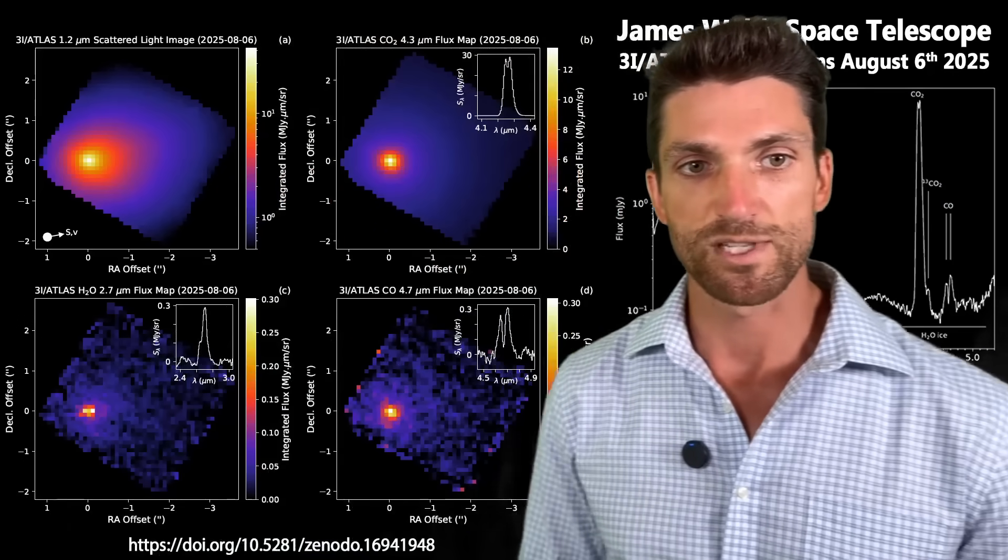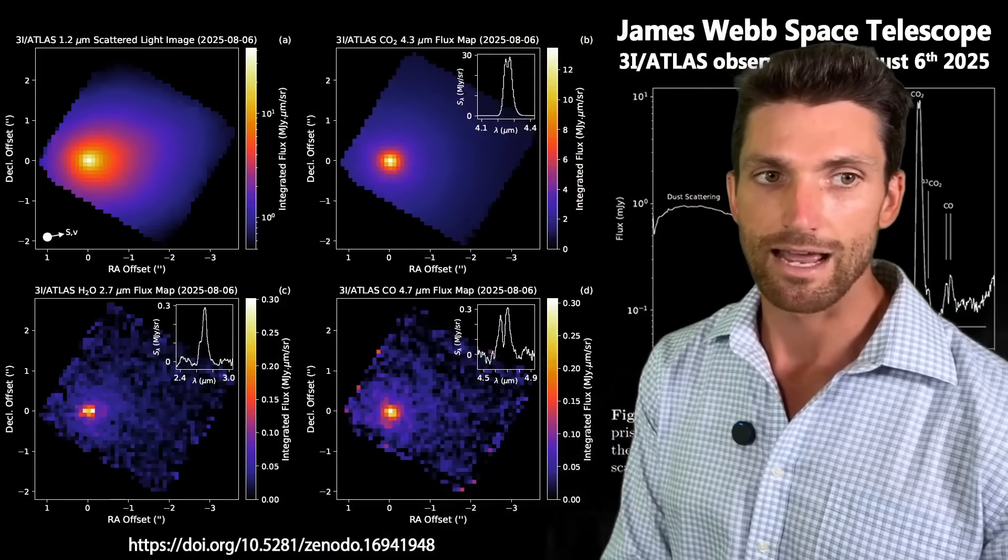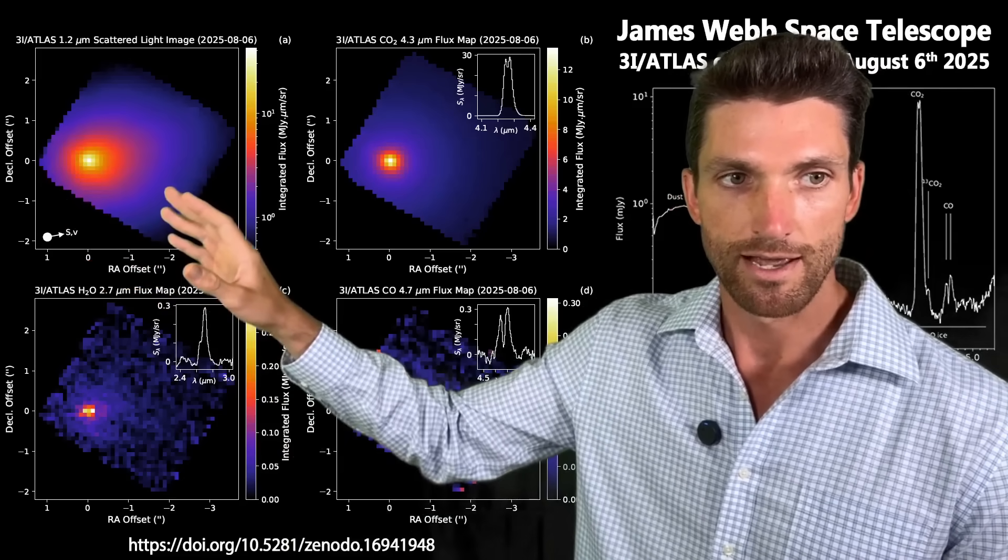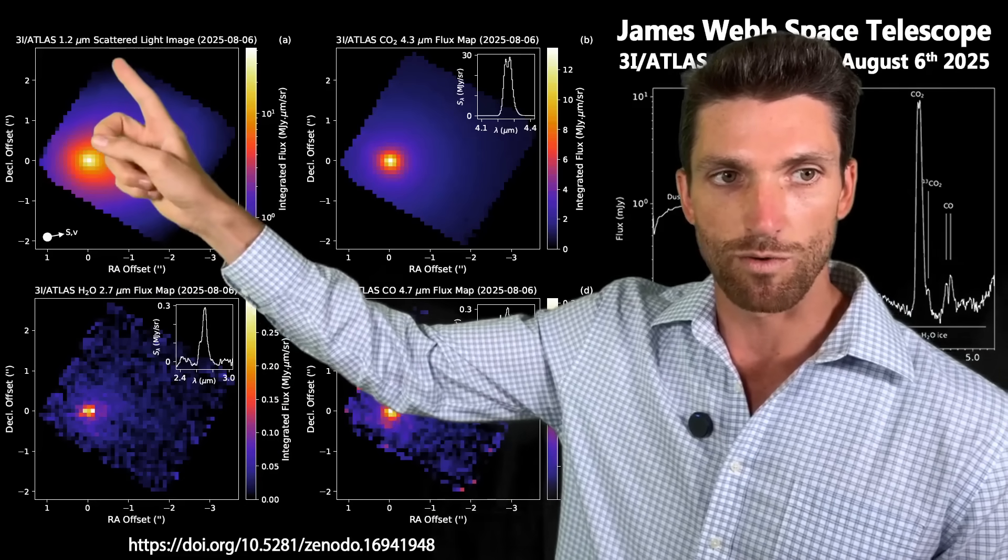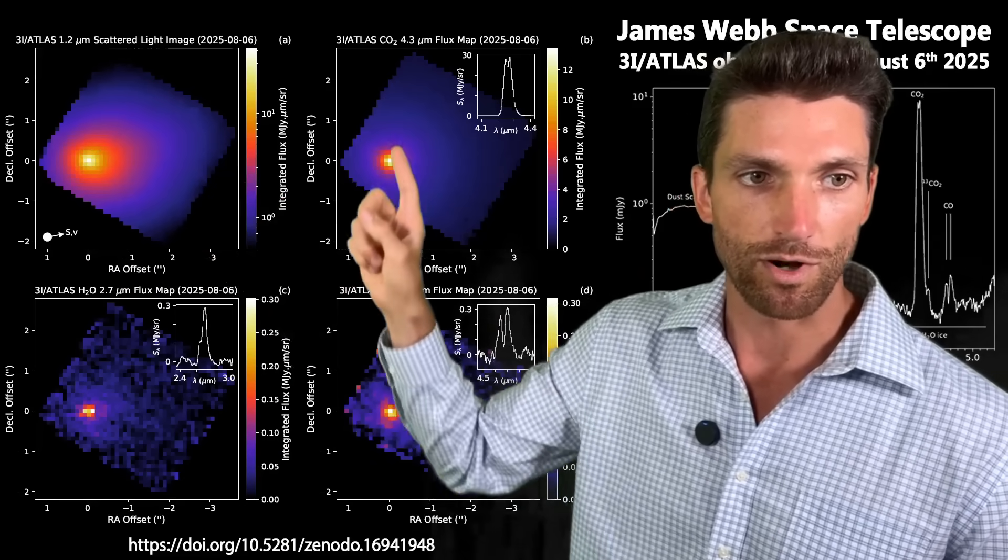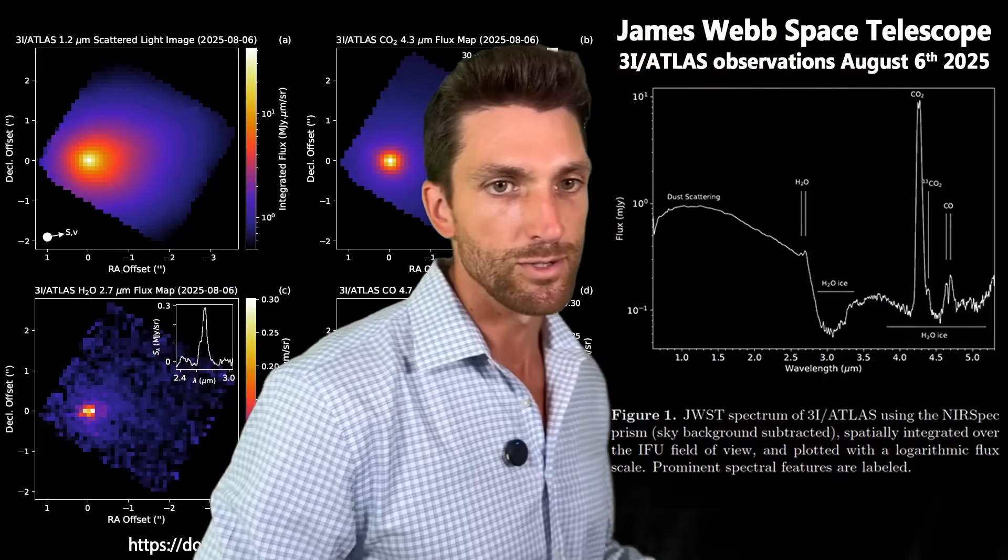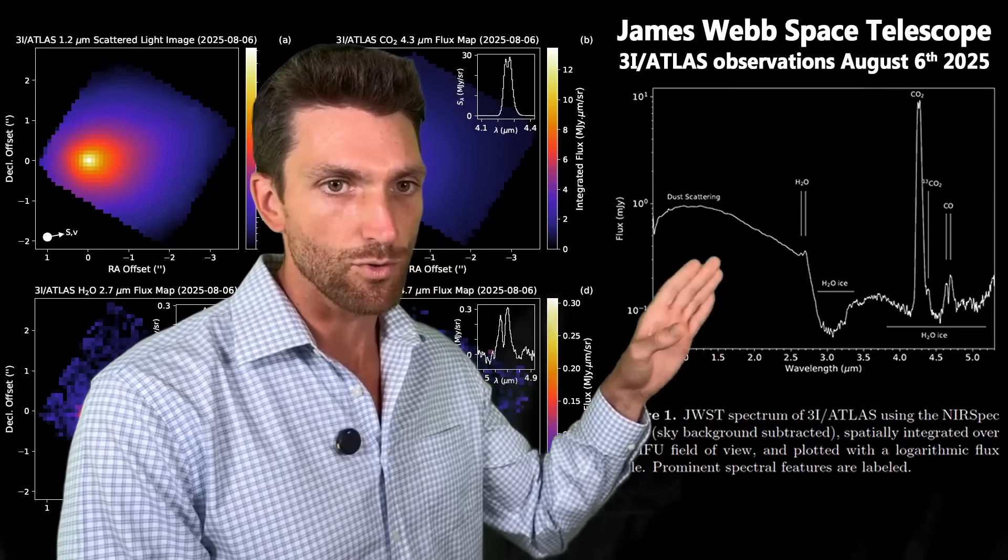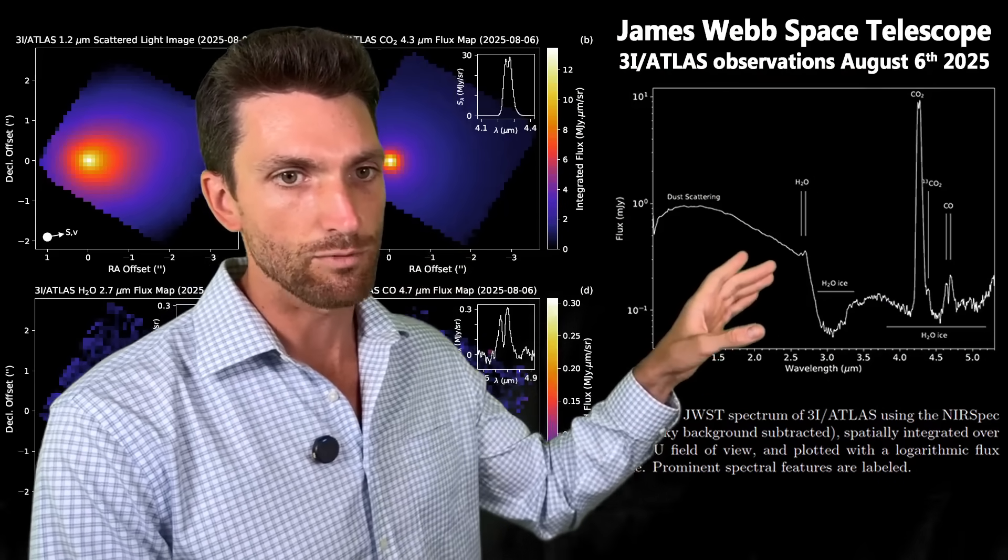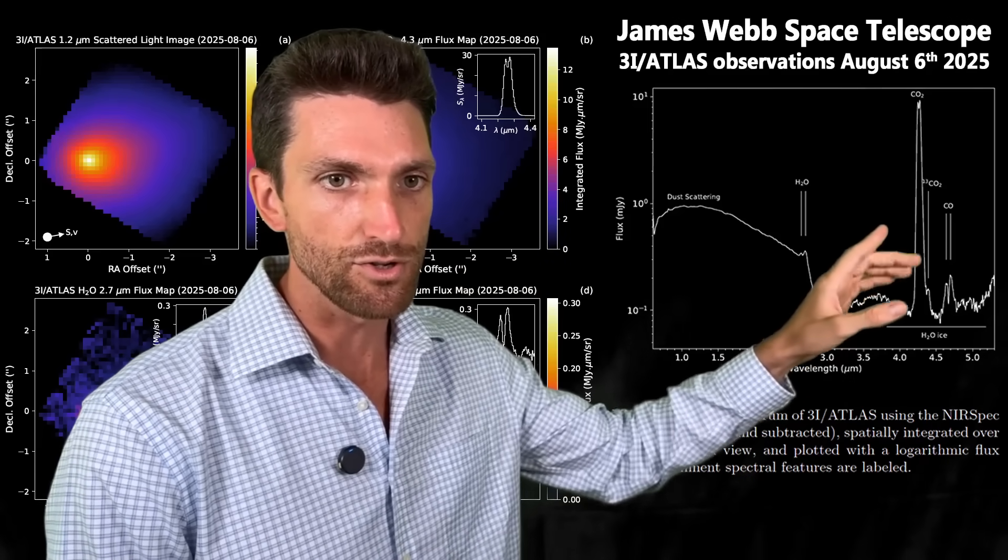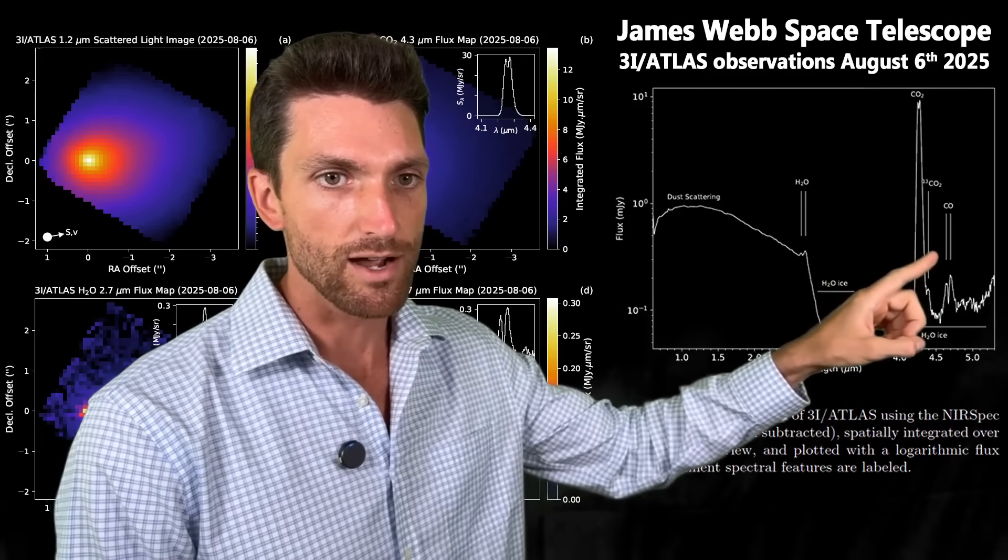Here we have our James Webb Space Telescope data, and we see that it has this very diffuse coma around it. And so these are different wavelengths. Like this is 1.2 micrometers, 4.3, 2.7, 4.7. They correspond to different chemicals or elements. And so, for example, right here, 2.7, that is the spectrum for water, and then we have CO2, and we also have carbon monoxide.